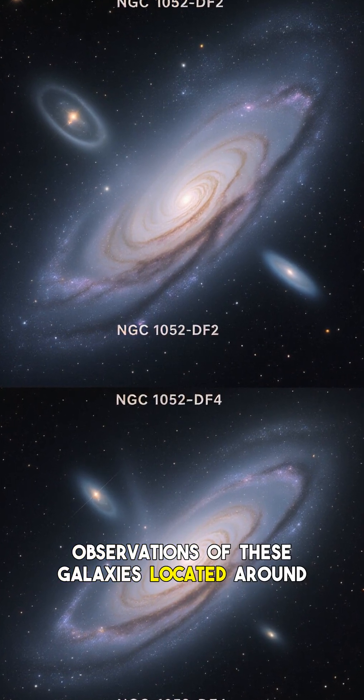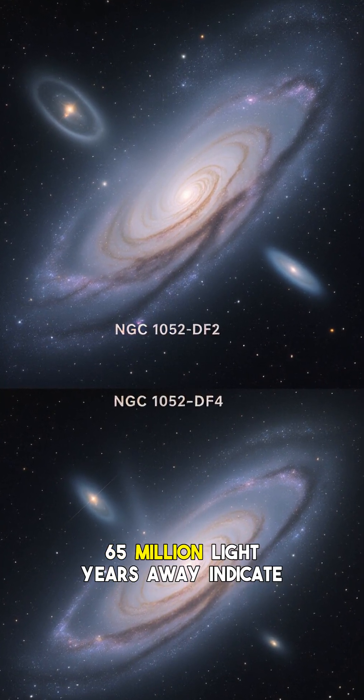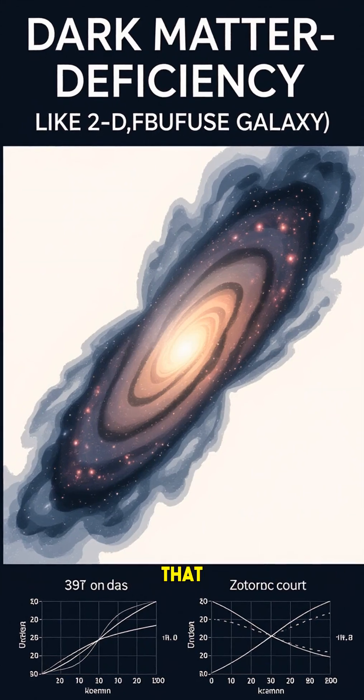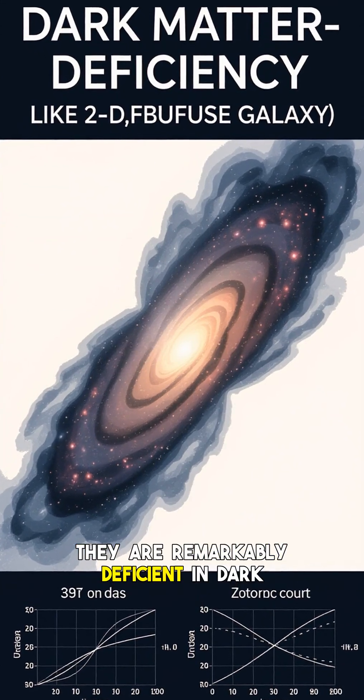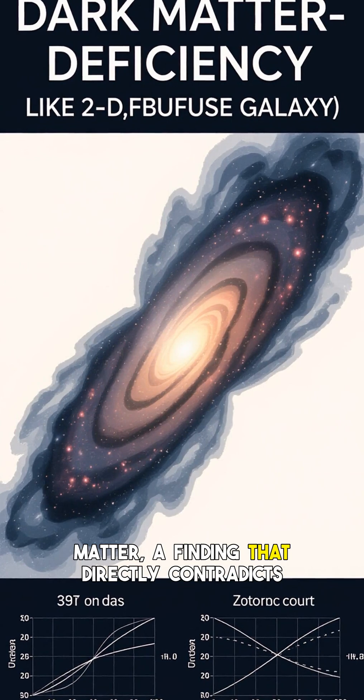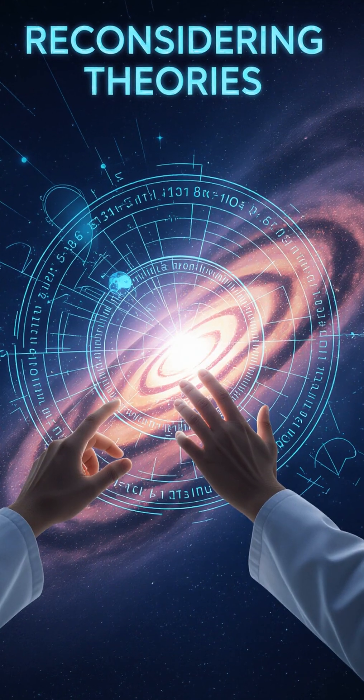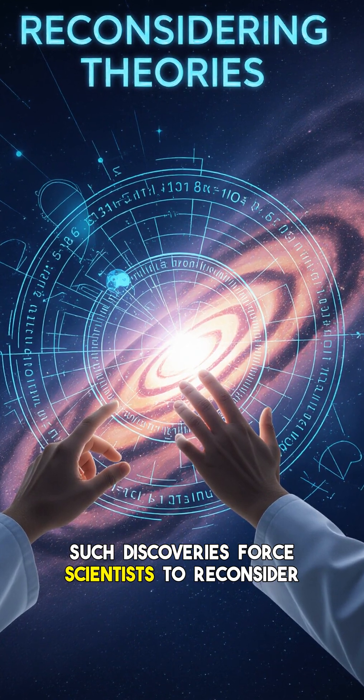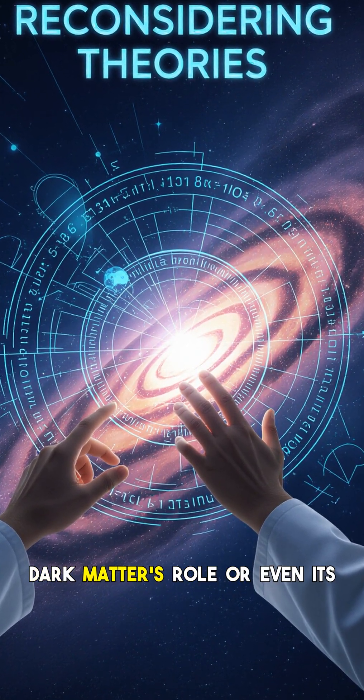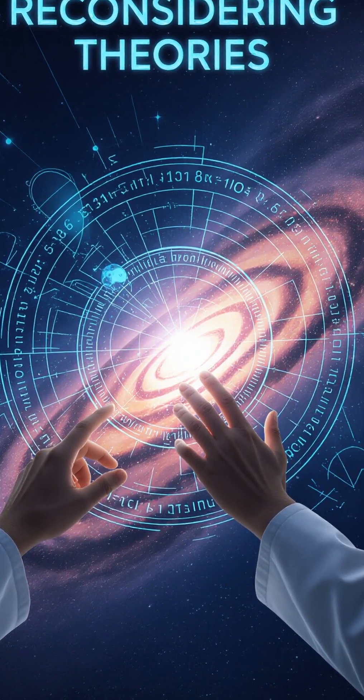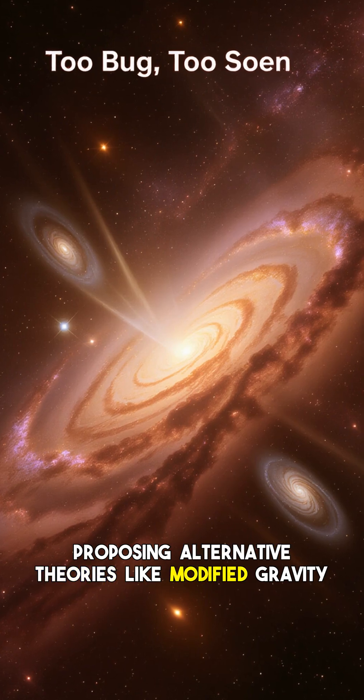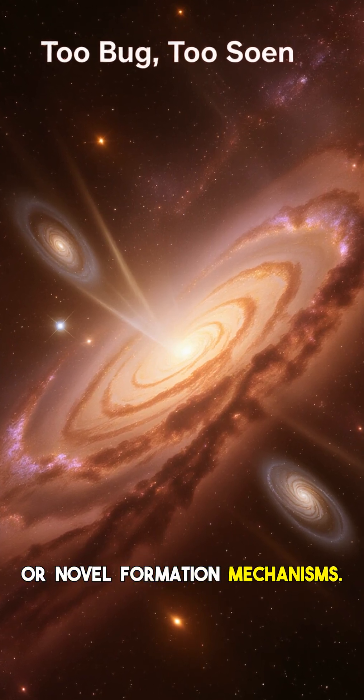Observations of these galaxies located around 65 million light years away indicate that they are remarkably deficient in dark matter, a finding that directly contradicts predictions of standard galaxy formation models. Such discoveries force scientists to reconsider dark matter's role or even its very nature, proposing alternative theories like modified gravity or novel formation mechanisms.